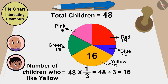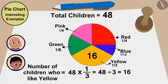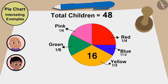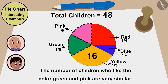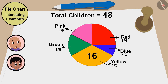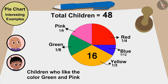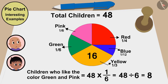A total of 16 children like yellow. And look — these parts show that the number of children who like green and pink are very similar, meaning the same number of kids liked pink and green. This part is one sixth of the pie chart. This means green and pink color is 48 multiplied by 1 sixth, or 48 divided by 6 — that is, 8 children. So 8 children like green and 8 like pink.